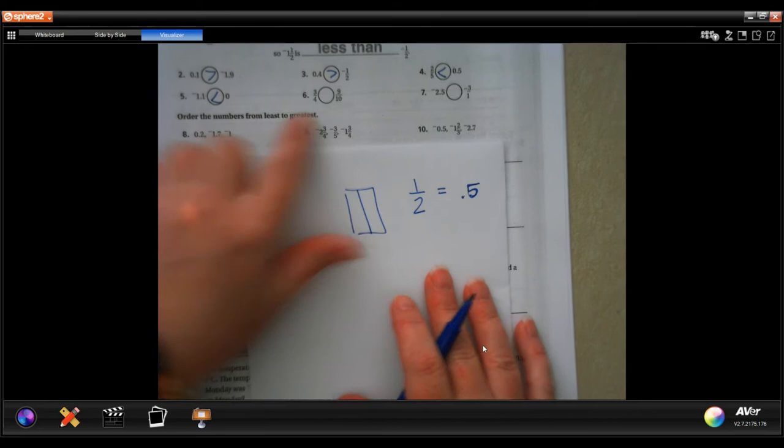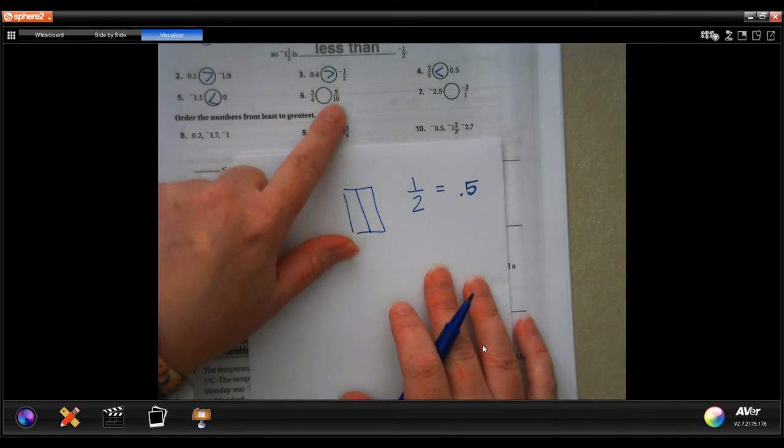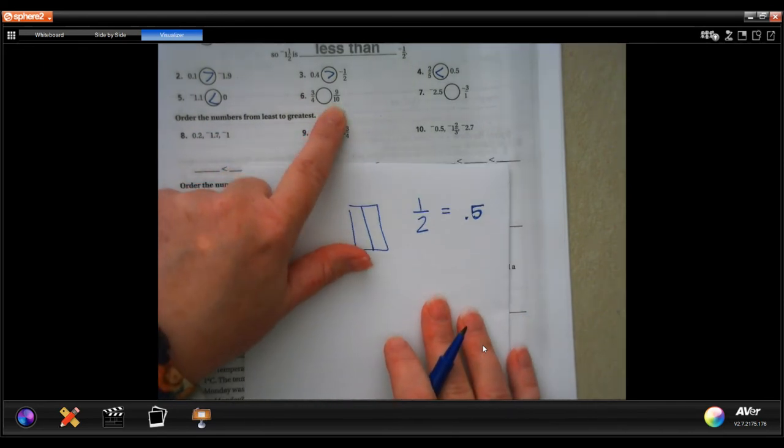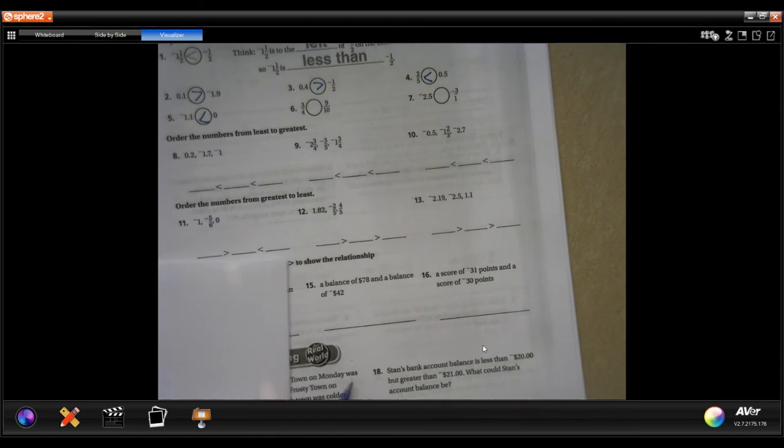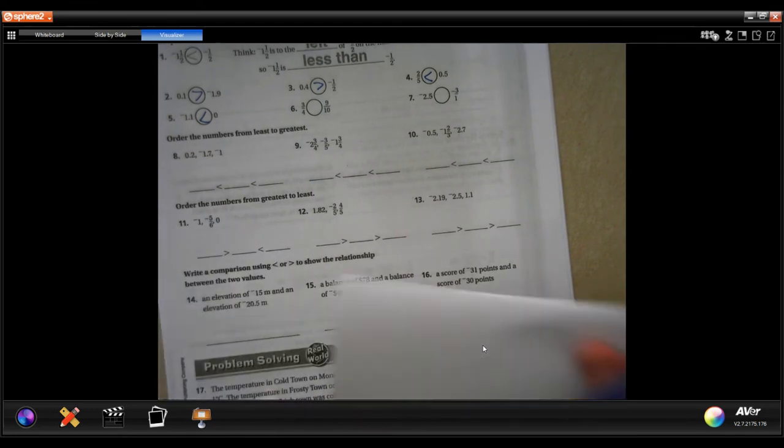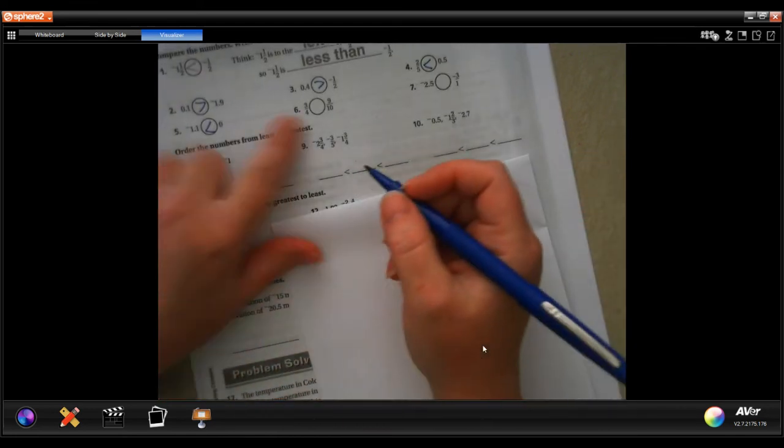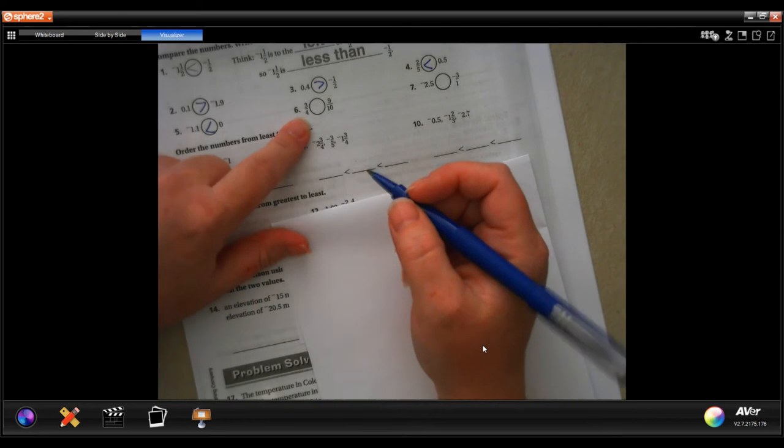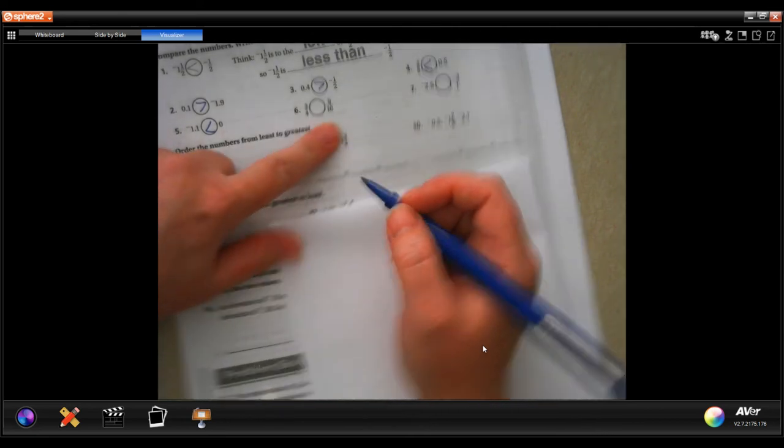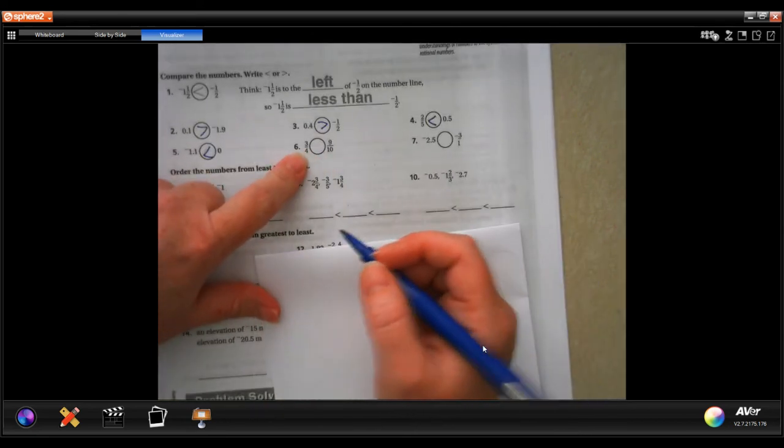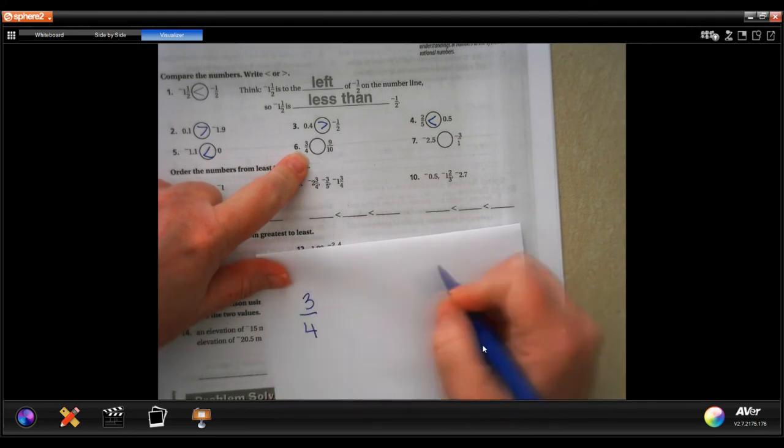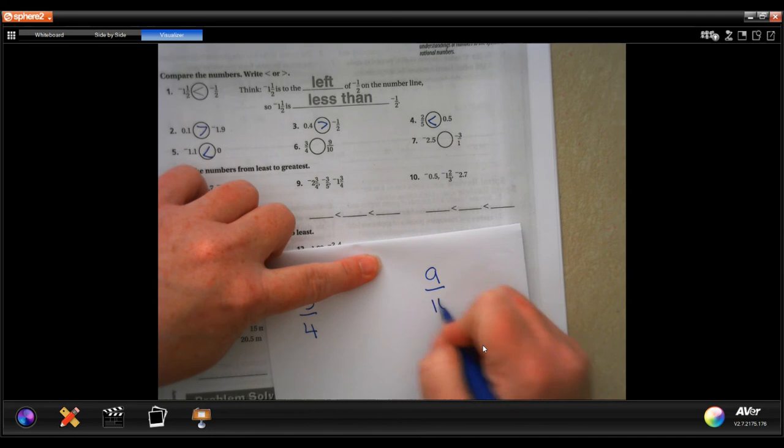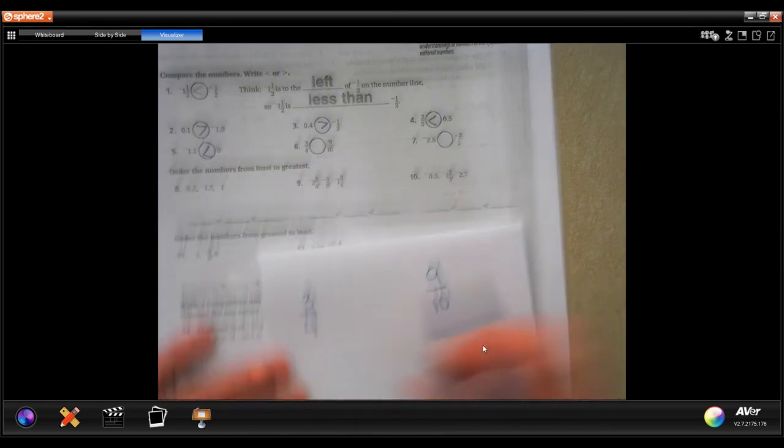So we're going to come down here. 9 is almost all of 10. 3 is almost all of 4. So we're going to go ahead and pull the paper back so we're not confusing ourselves. Now I'm just going to make the denominators the same, and then we'll know which numerator is bigger is going to be our answer.